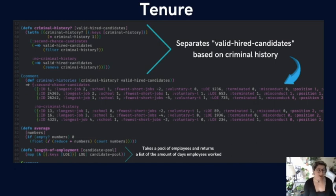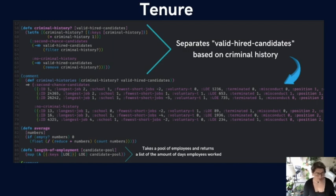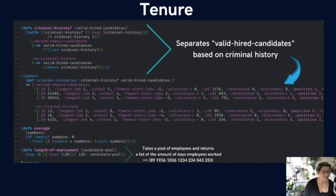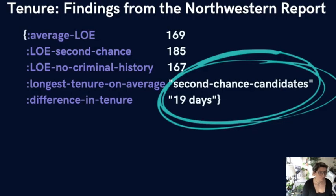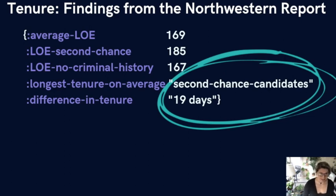In the code, I perform some logic that separates the valid hired candidates into two separate pools: those that had a criminal history and those that do not. Then I wrote some code that gets the length of employment for all of those candidates. The next video will have a very deep dive into the different ways we can do that, how I wrote the algorithm, and what I was thinking as I did it.